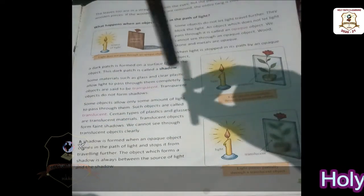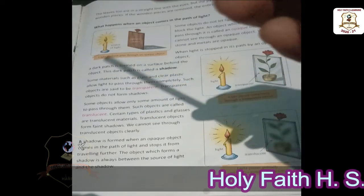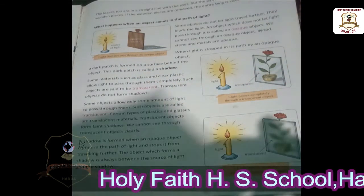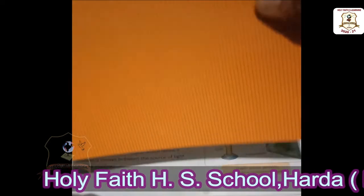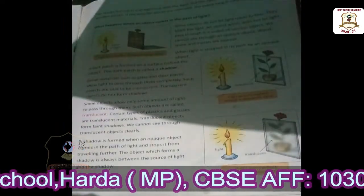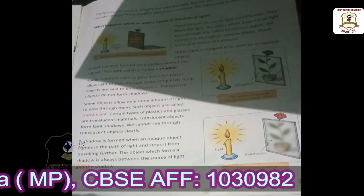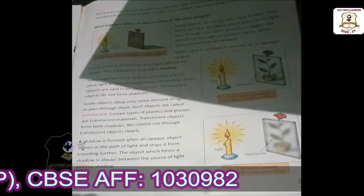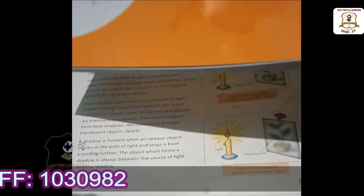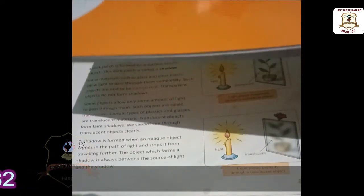See this pencil — this pencil is an opaque object. See this notebook — this notebook does not let light pass through it, and that is why a shadow is formed.